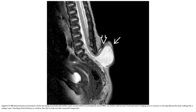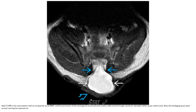This T2 image demonstrates termination of the low-lying neural placode within an unrepaired sacral myelomeningocele. Postnatal spine imaging prior to closure is not typically performed, making this a unique case. Checking clinical studies to confirm this is truly not skin-covered is important. This T2 image in the same patient confirms myelomeningocele with protrusion of the meninges and neural elements through a posterior dysraphic defect; note the bandaging covering the affected side.